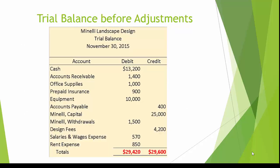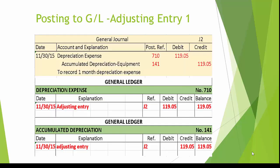Here is the trial balance before adjustments. Here is adjusting entry 1, which is for one month depreciation expense. Notice each debit and credit is transferred individually to their respective general ledger account. Here we see the debit of $1,190.05 being entered in the depreciation expense account, resulting in a balance also of $1,190.05.